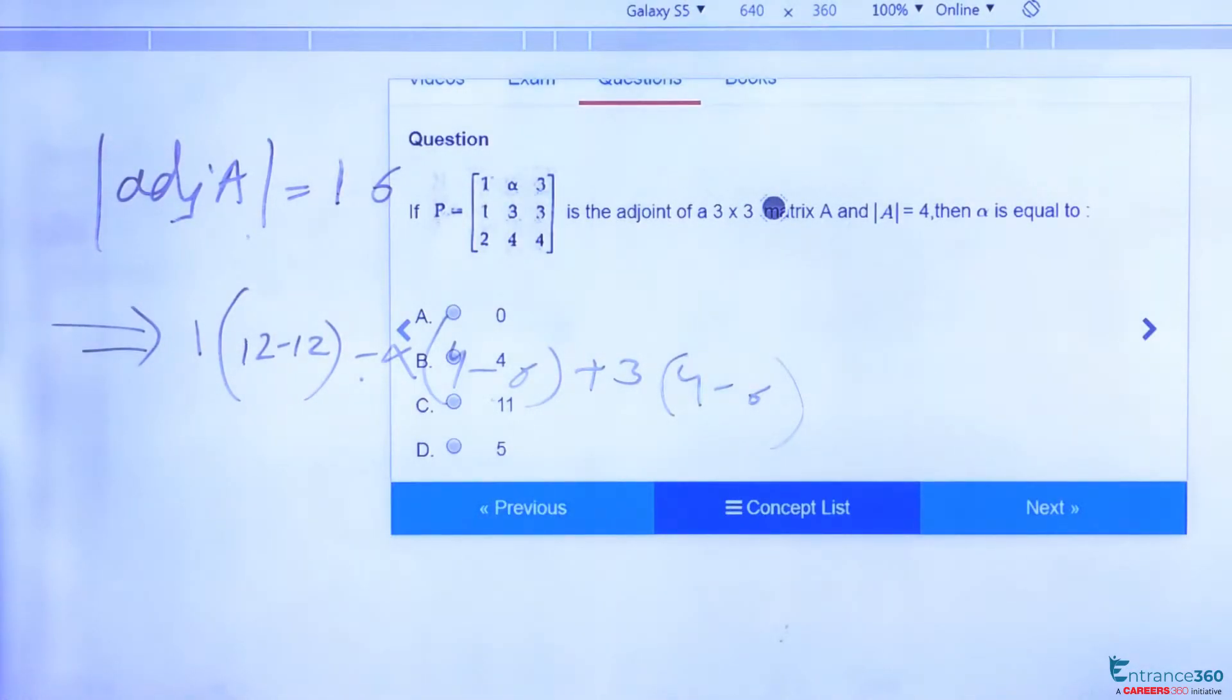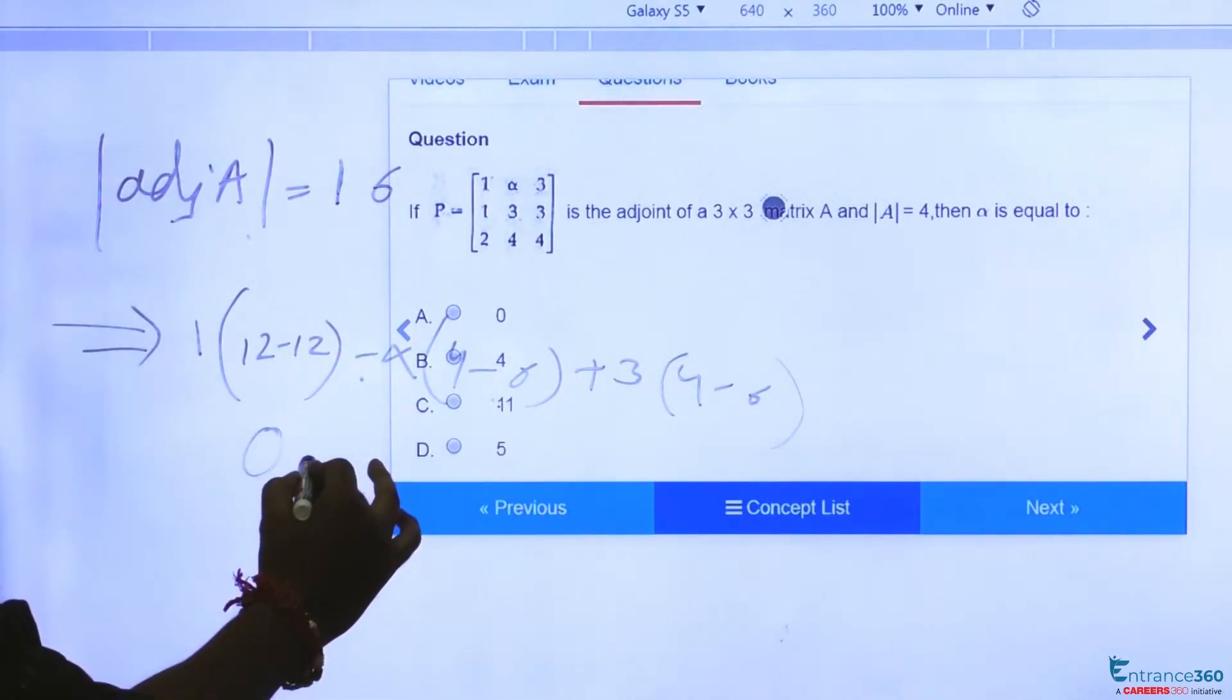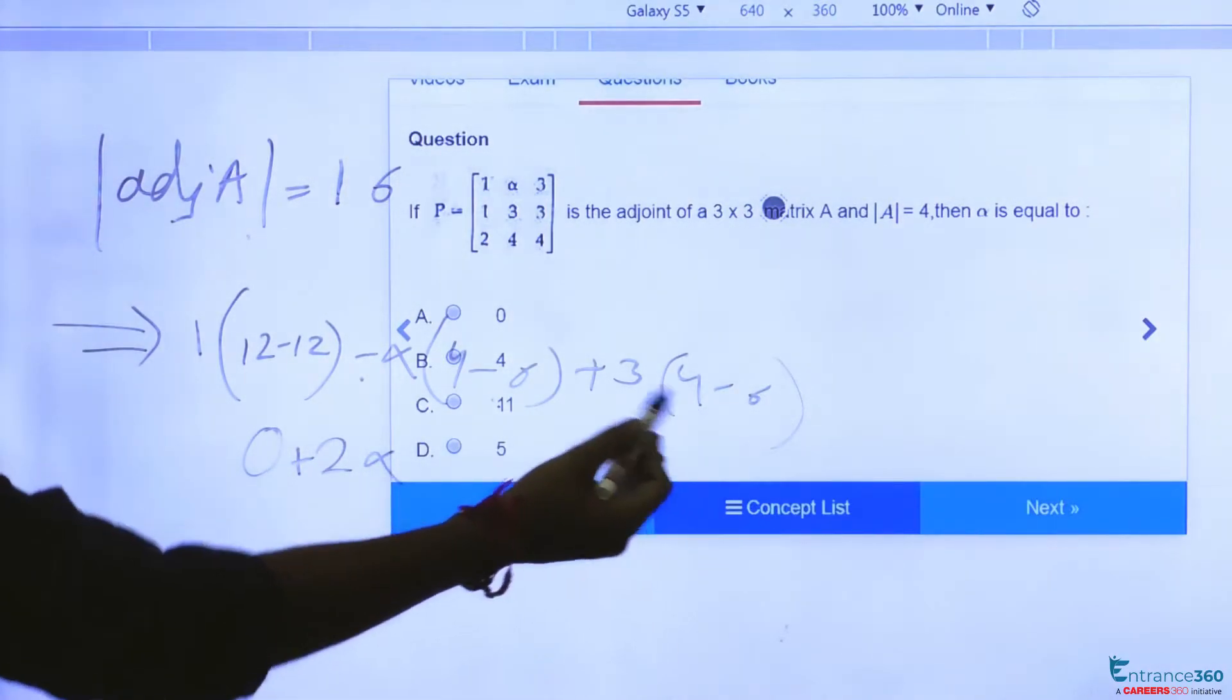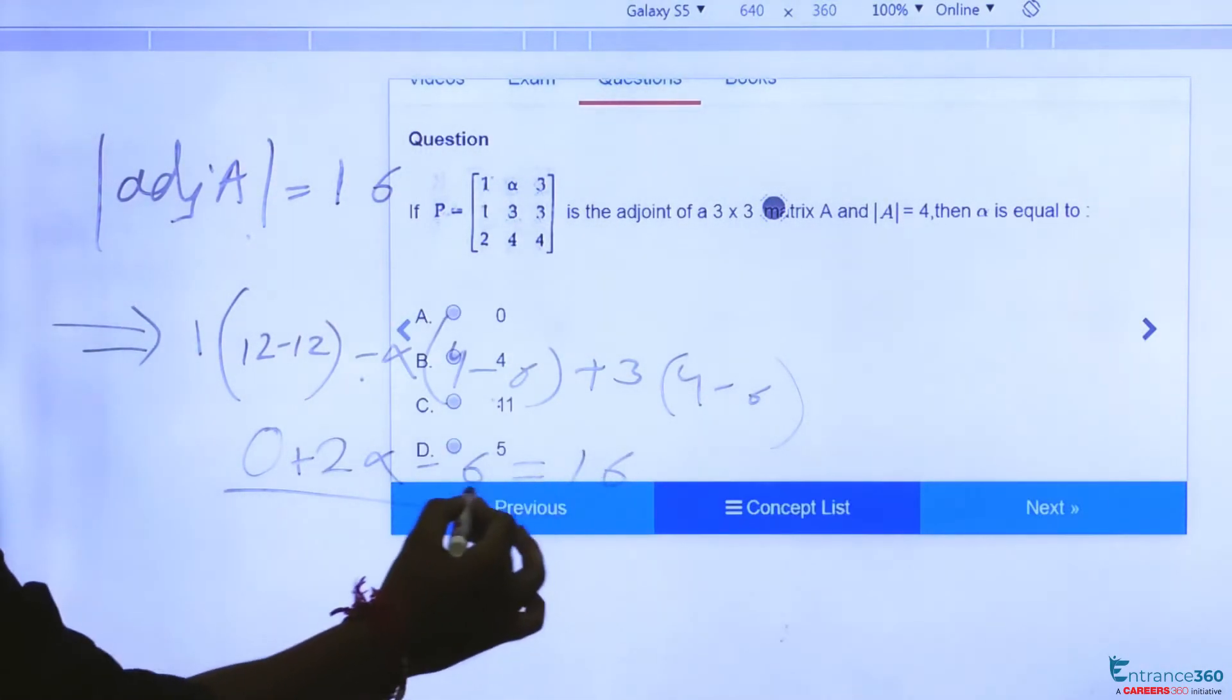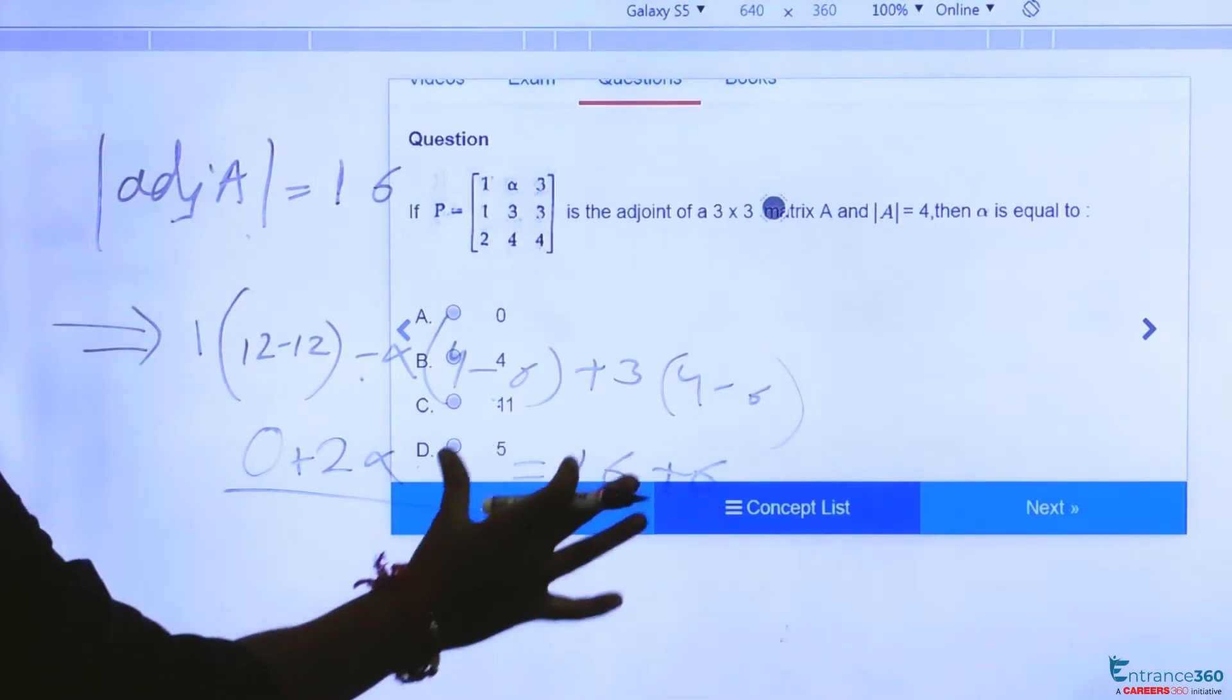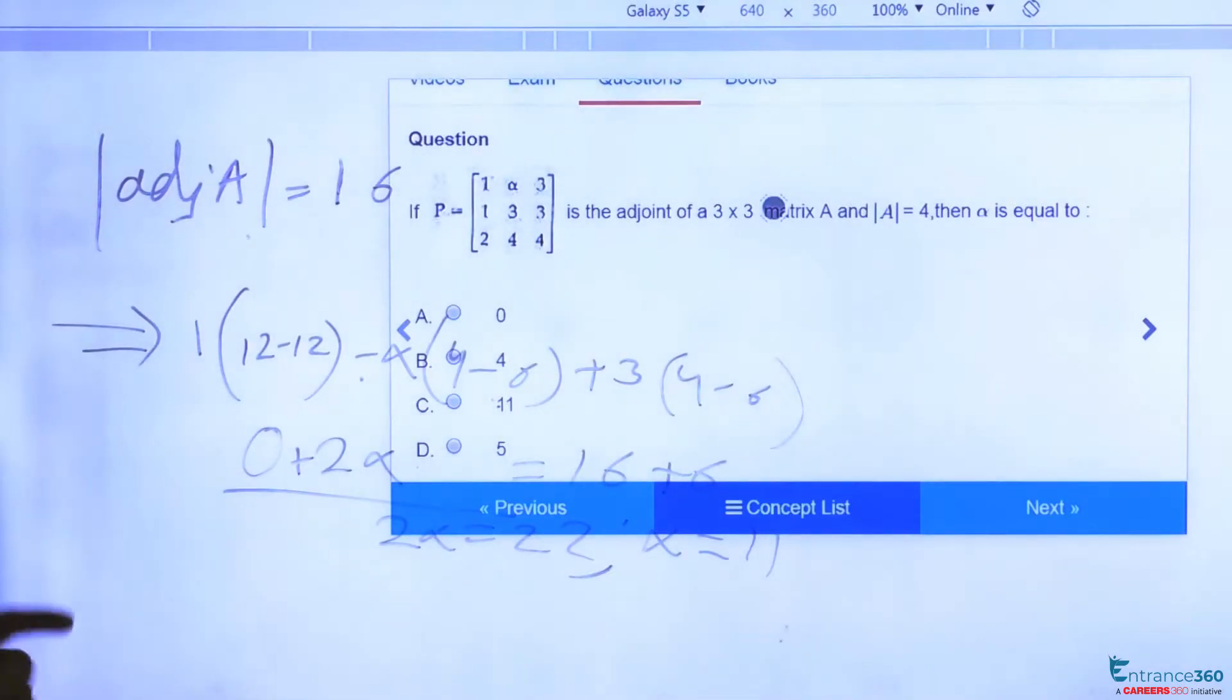So after further simplifying this equation we are left with 0 here, then minus 2 into minus alpha which will be equal to 2α, minus 2 into 3 which will be equal to minus 6, and this is equal to 16. Now this minus 6 will become plus 6 here, so we have 2α equal to 22. From here we can write alpha as 11.